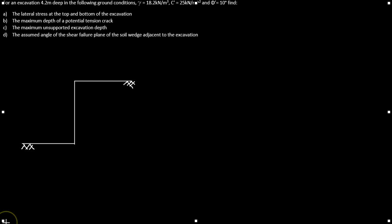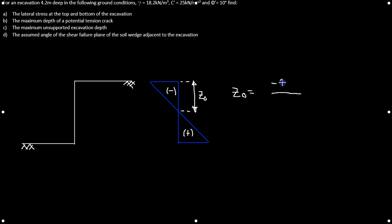Part B asks us to calculate the maximum depth of a potential tension crack. Referring to the pressure diagram, z₀ runs from the top to the midpoint of the diagram. We calculate z₀ as minus 2 times cohesion divided by gamma times the square root of kA — substituting: minus 2 times 25 divided by 18.2 times the square root of 0.7 — which equals 3.28 meters.